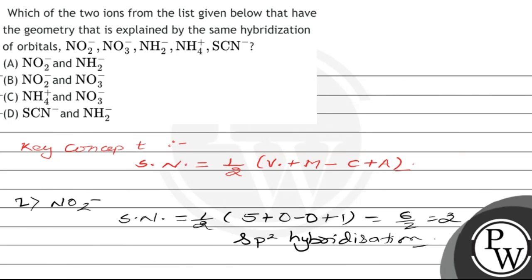Now let's check the options. Option A is incorrect, as the hybridization of NO₂⁻ is sp2 and that of NH₂⁻ is sp3. Option B is correct, as the hybridization of both NO₂⁻ and NO₃⁻ is sp2. Option C is incorrect, as NH₄⁺ is sp3 and NO₃⁻ is sp2. Option D is also incorrect, as SCN⁻ is sp and NH₂⁻ is sp3.